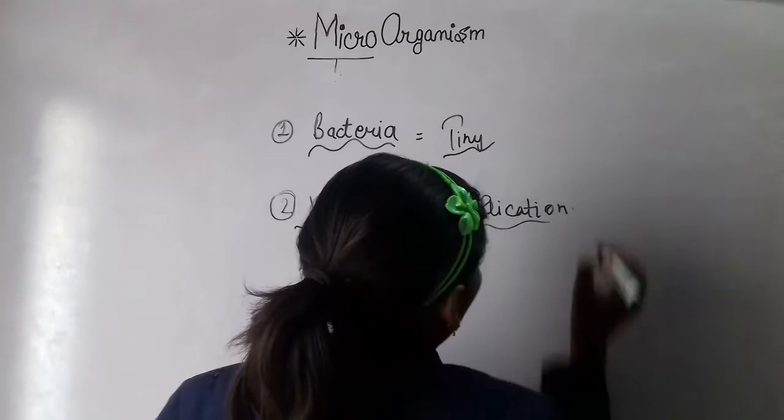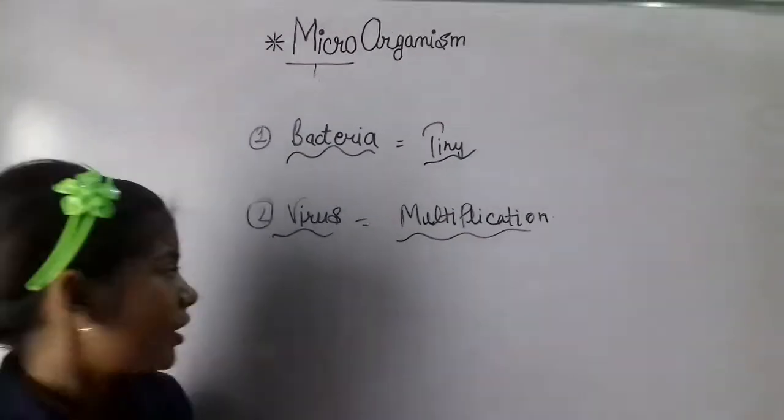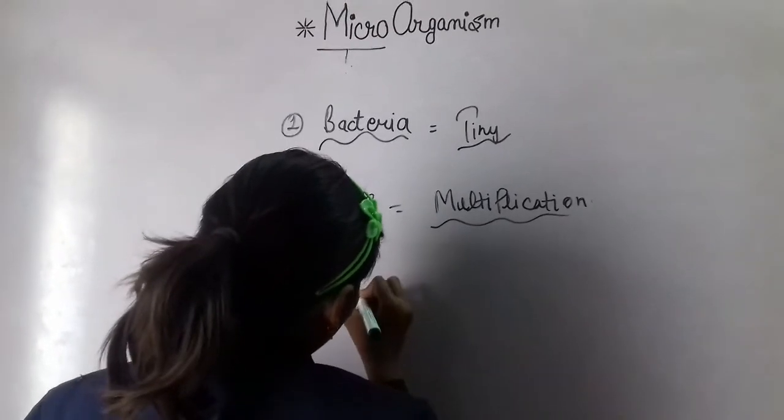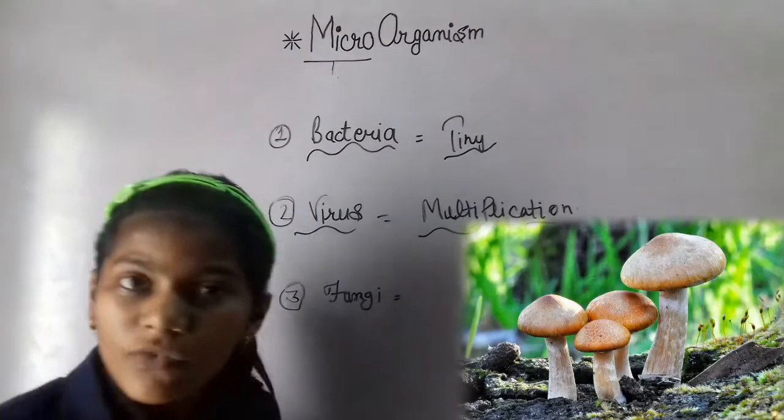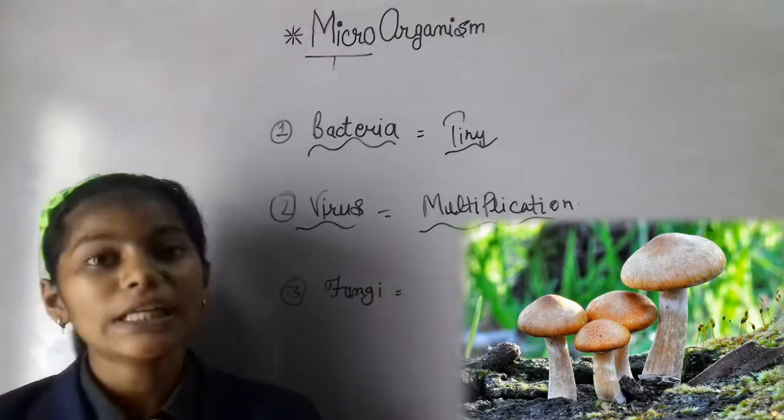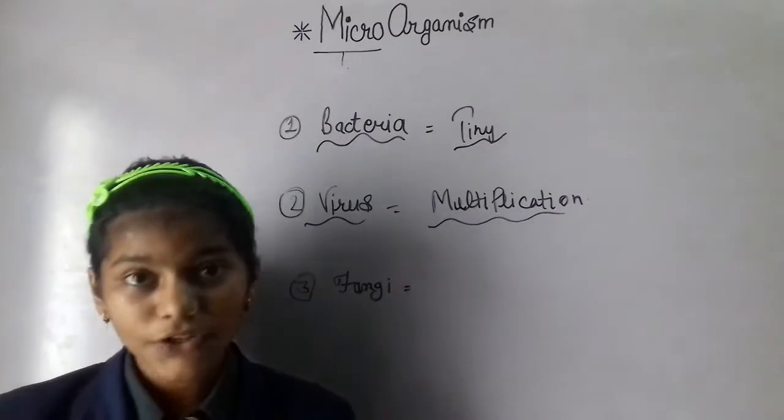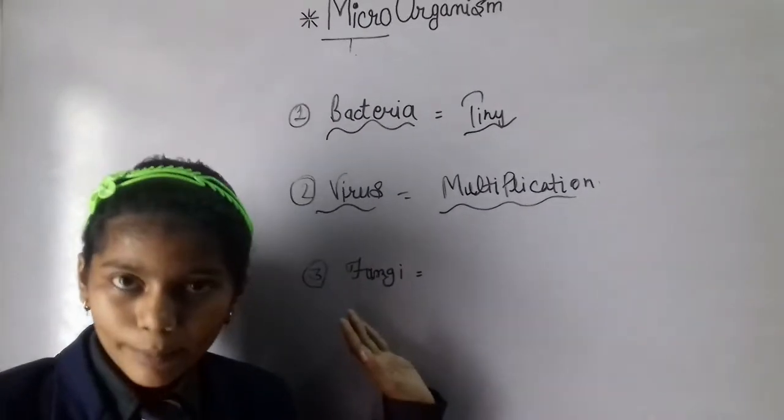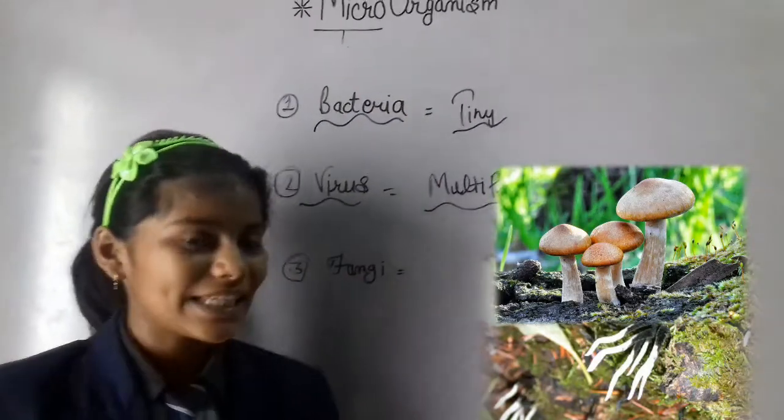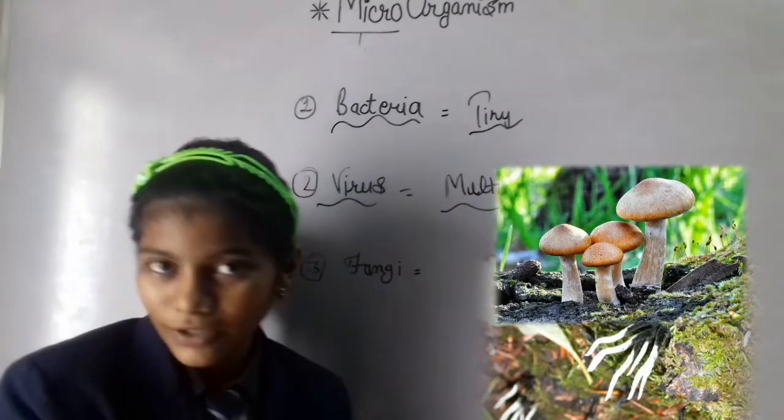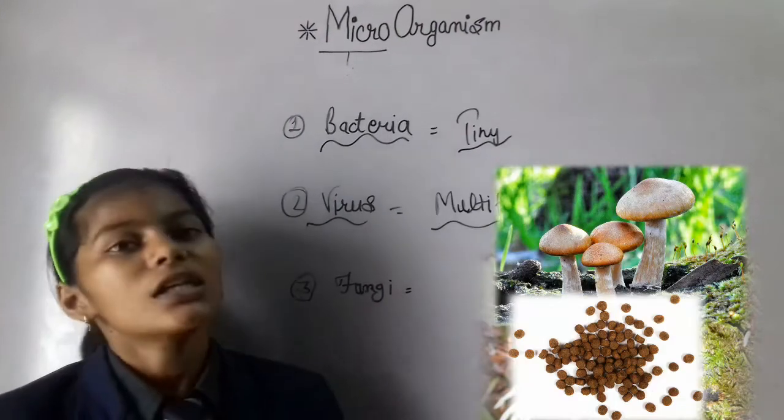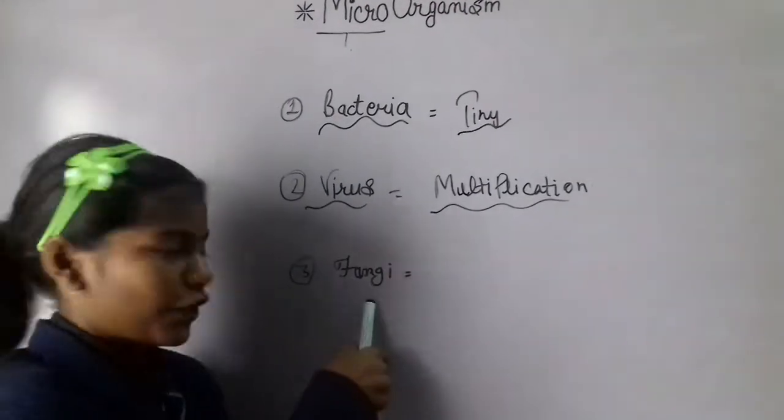Third part will be fungi. So what are these fungi? First of all, a question is arising in our mind: how does digestion take place in this fungi? This is a fungi and you can see that a finger-like structure is coming out from this fungi.